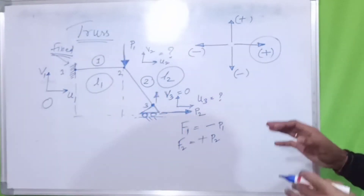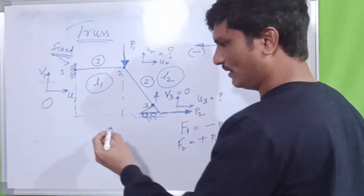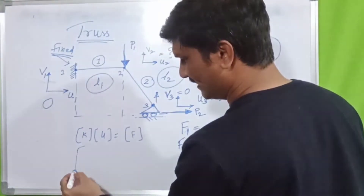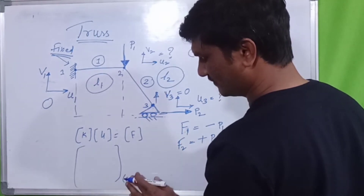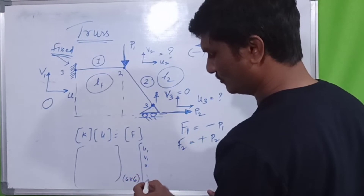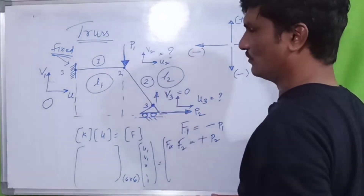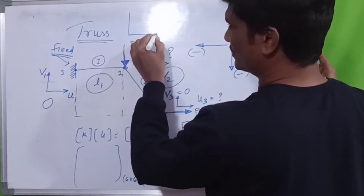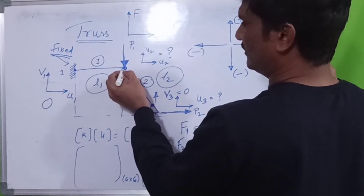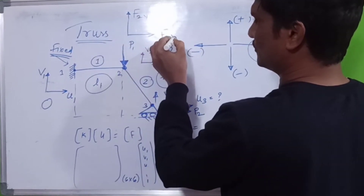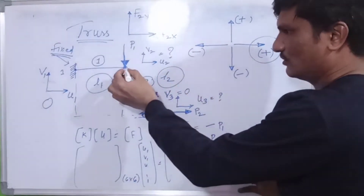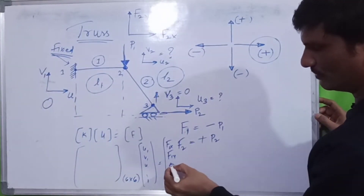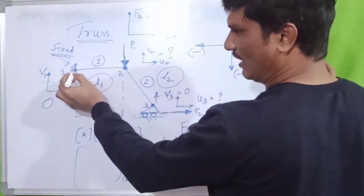To calculate the reaction forces, you will have the finite element equation K·U = F. You will have a K matrix — maybe 6×6 or 4×4 — multiplied by displacements like U1, V1, U2, V2, and forces like F1X, F1Y. At each node in the truss element there will be two forces: for example at node two, F2Y for the vertical force and F2X for the horizontal force, because in a truss problem there are two displacements — horizontal and vertical.